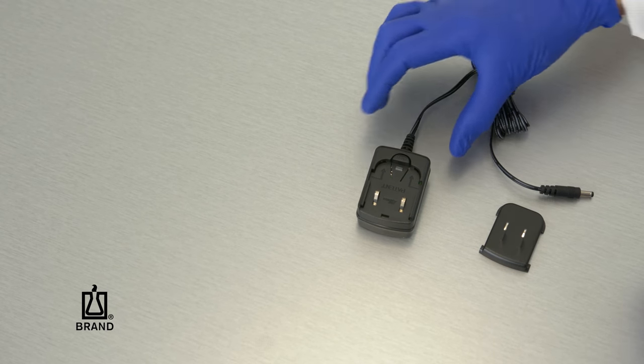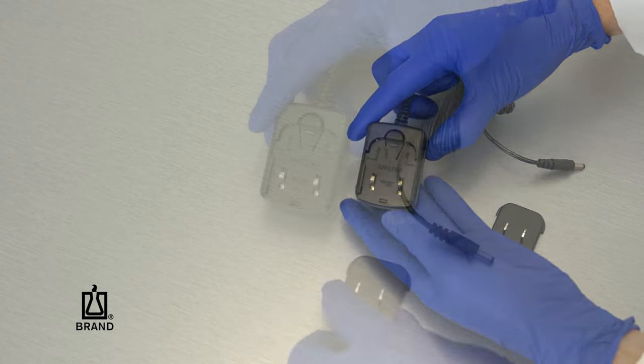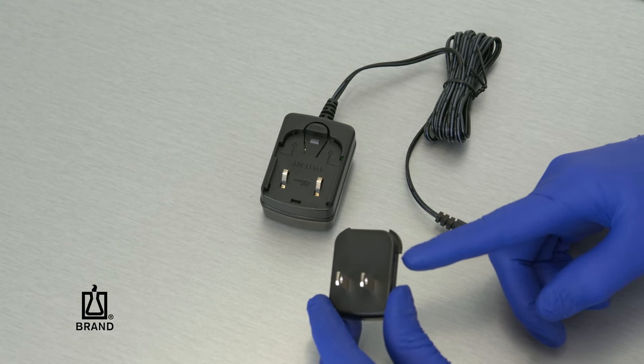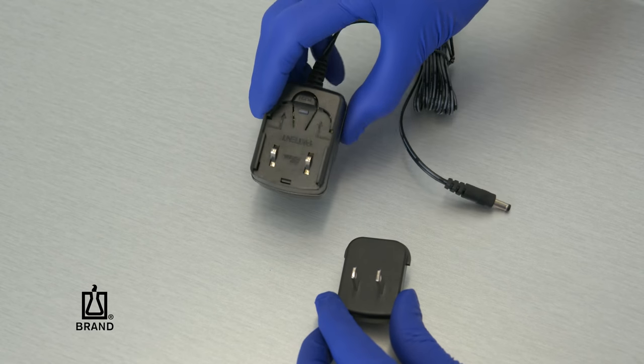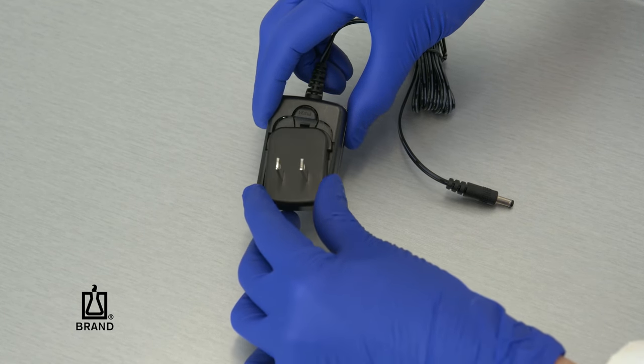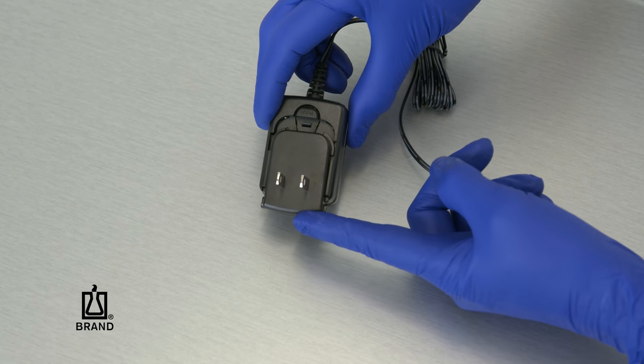To assemble the power cord, select the appropriate adapter for your region. Align the rounded portion of the plug adapter to the arrows on the power adapter and slide until it snaps into place.